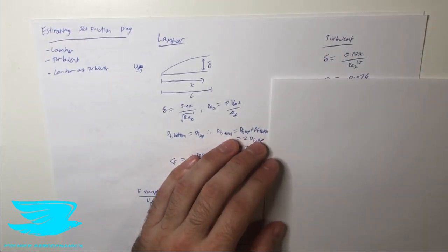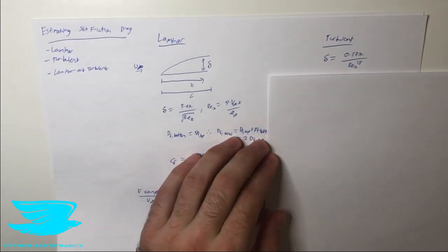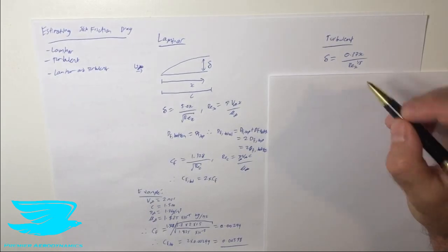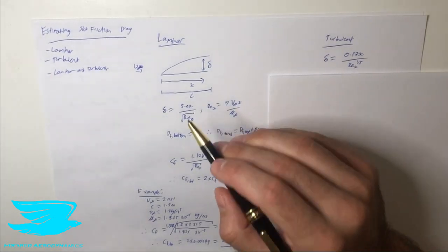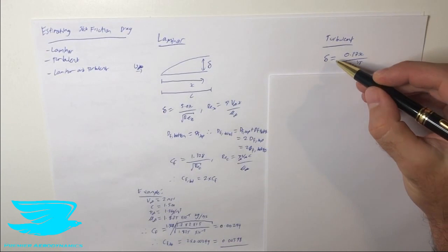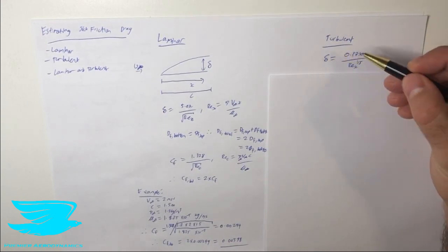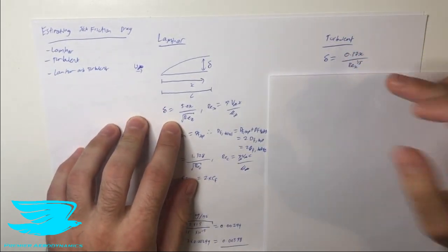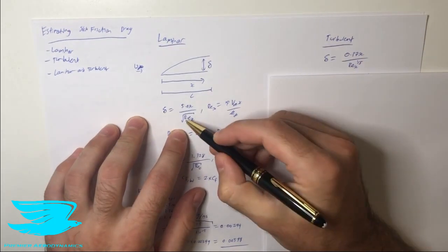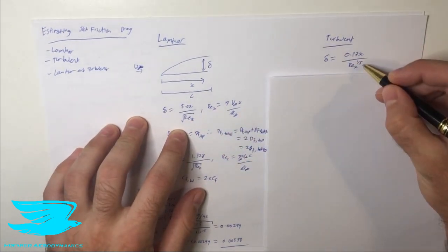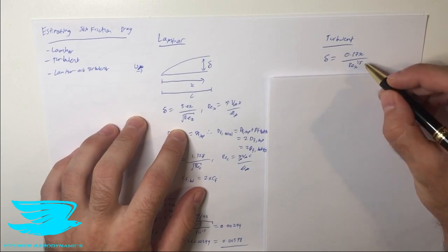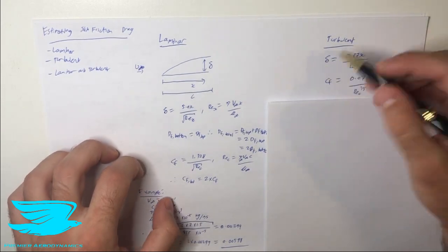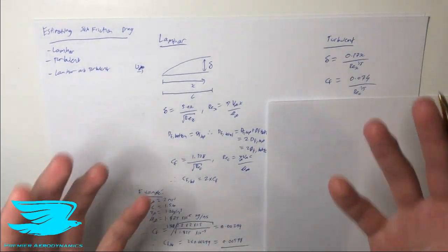Let's move on to turbulent boundary layers. If you haven't watched the video on turbulent boundary layers, make sure to do so to understand the difference. The thickness of a turbulent boundary layer is quite different from a laminar one — it's actually quite a bit thicker. The equation to calculate the thickness delta is different: the numerator is different, and more importantly, the denominator is the Reynolds number to the power of 1/5 instead of a square root, meaning the turbulent boundary layer grows much quicker.